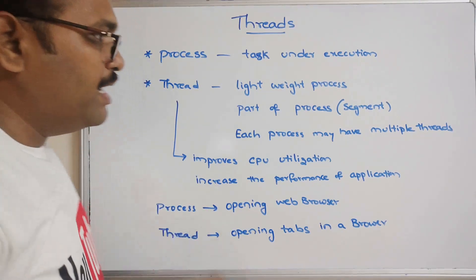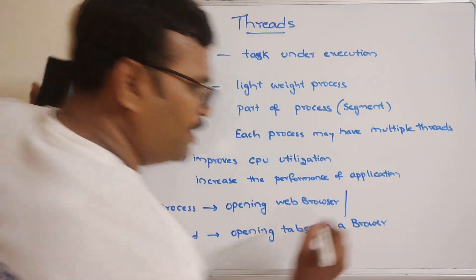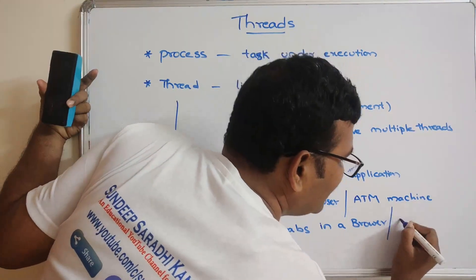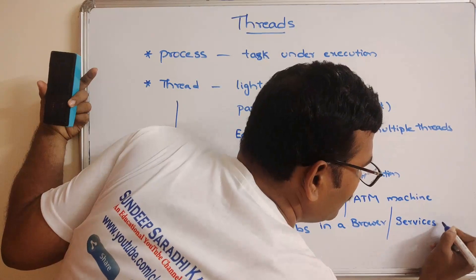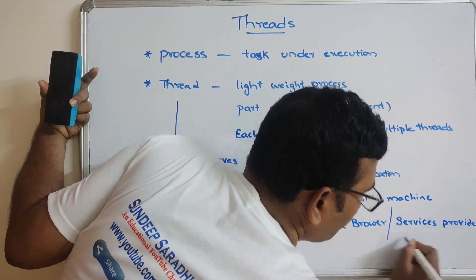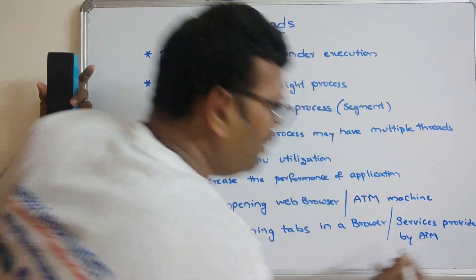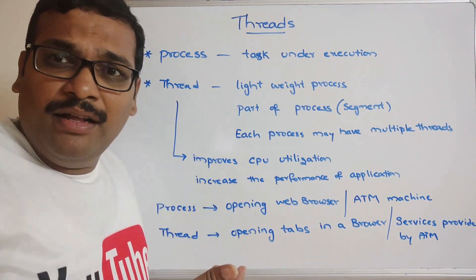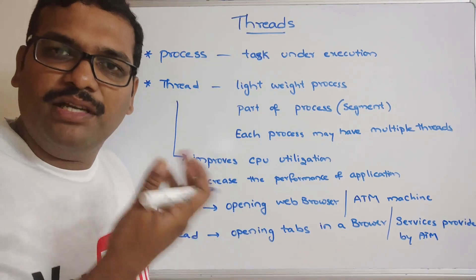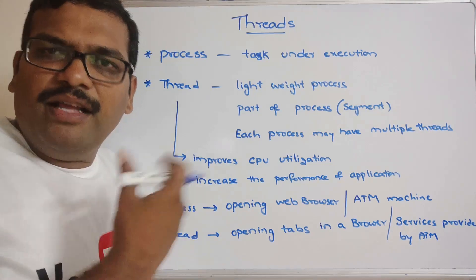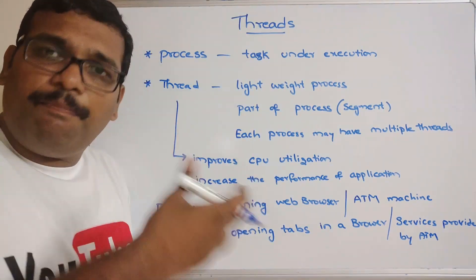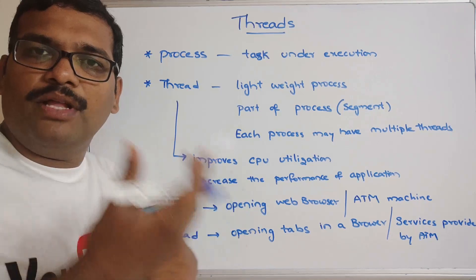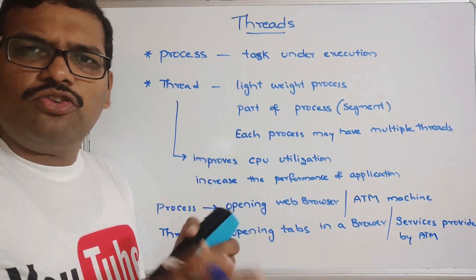Similarly, consider an ATM machine as one process. The services provided by the ATM — such as withdrawal, mini statement, deposit, pin change — can be considered as threads. That means a part of a process. So a process can be divided into multiple threads, and depending upon the application it may have multiple threads or a single thread.